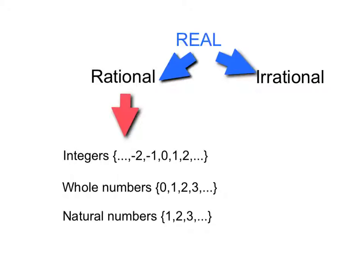Now the integers include the whole numbers — zero, one, two, et cetera — and their opposites. So the integers include negative one, negative two, negative three, et cetera, all the way in the negative direction. So those are our real number categories.